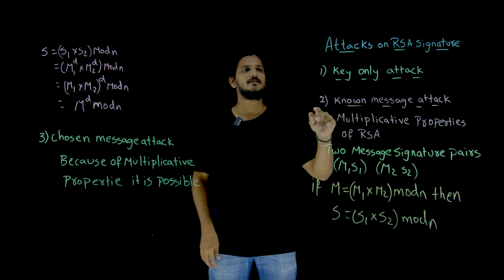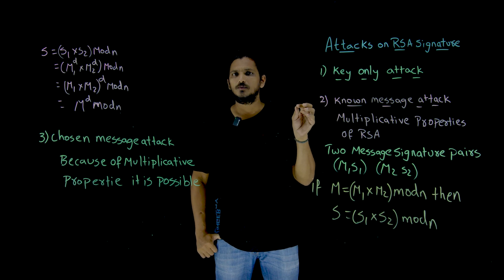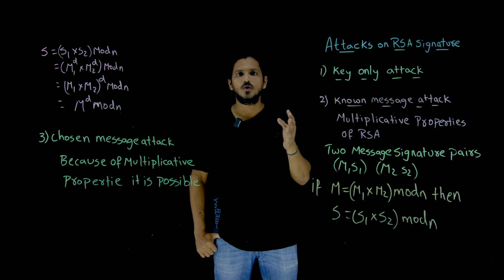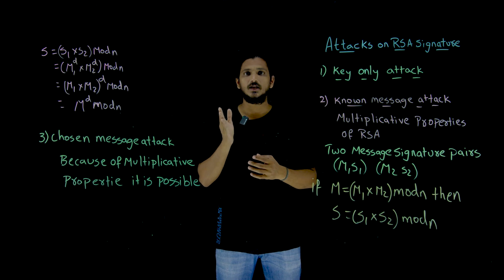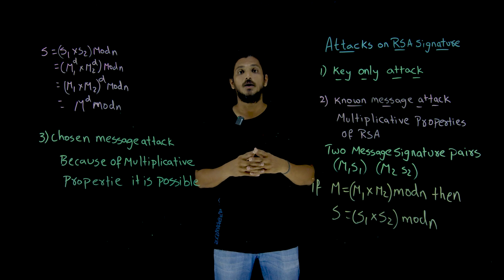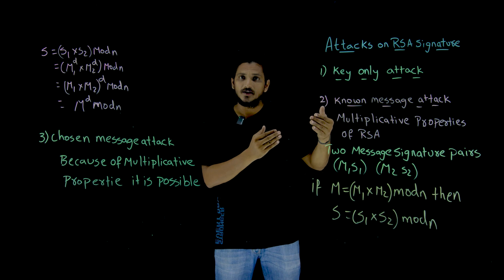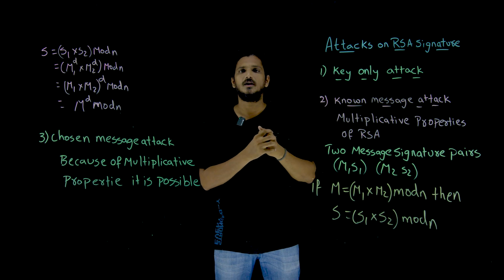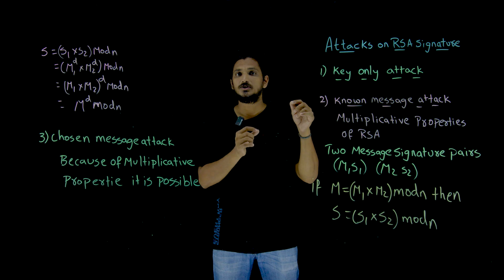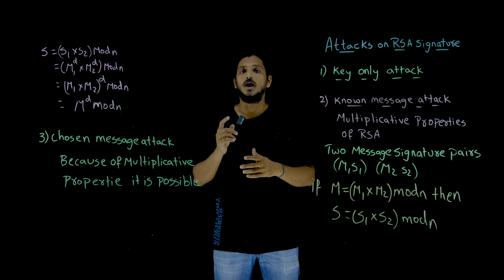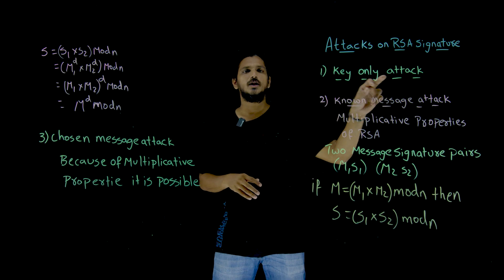Coming to today's class, our first attack is a key-only attack. Is it possible to get a key-only attack by using RSA signature? No, it is not possible. Key-only attack means here in RSA we are generating a private key and public key. Public key is open to all. By using that public key, is it possible to identify the private key? No, it is not possible because it is a logarithmic problem. So key-only attack is not possible.